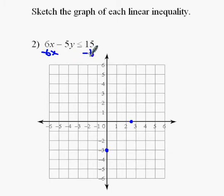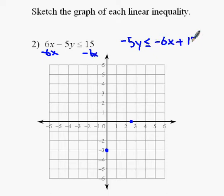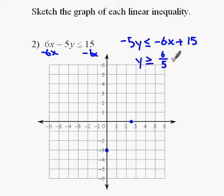If I solve it for y, I would be subtracting 6x from each side first. I'd get negative 5y is less than or equal to negative 6x plus 15. Now, when I divide by negative 5 to get y by itself — since I divided by a negative number, I have to flip the sign around. Remember that: if you divide or multiply an inequality by a negative number, you have to flip the sign. So negative 6 divided by negative 5 is positive 6/5 x, and positive 15 divided by negative 5 is negative 3. Now I can graph it: it starts at negative 3, goes up 6 and right 5, and we get the same line as before.